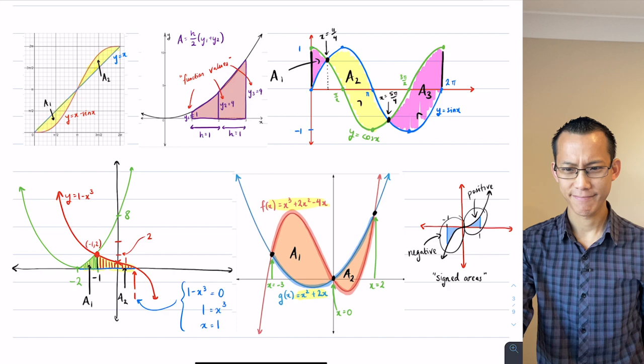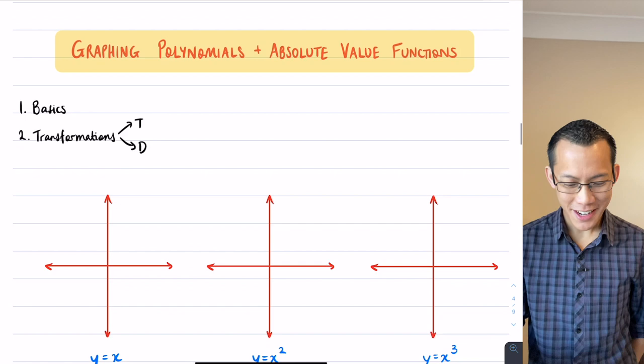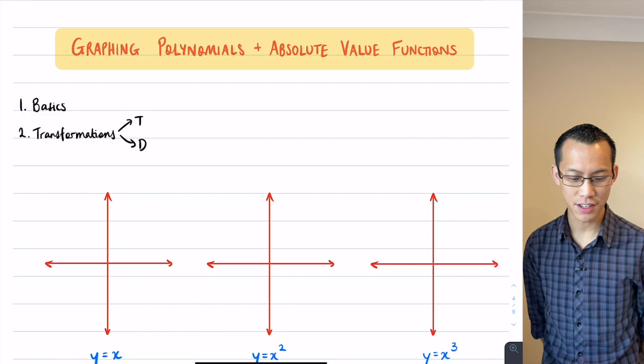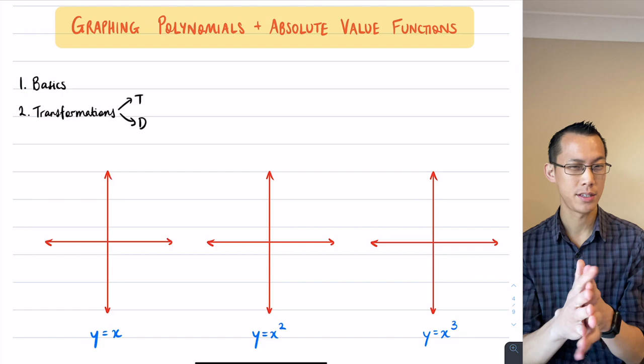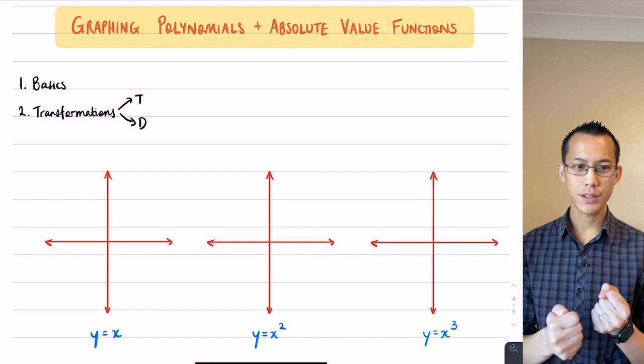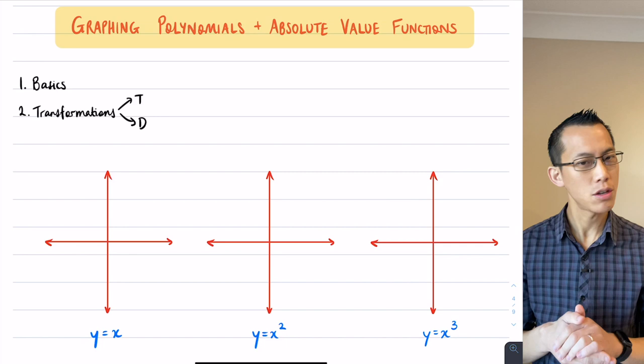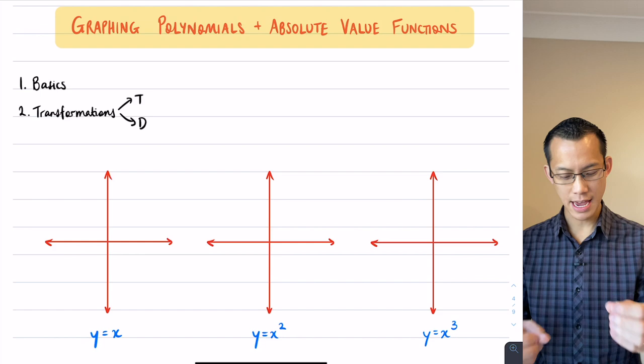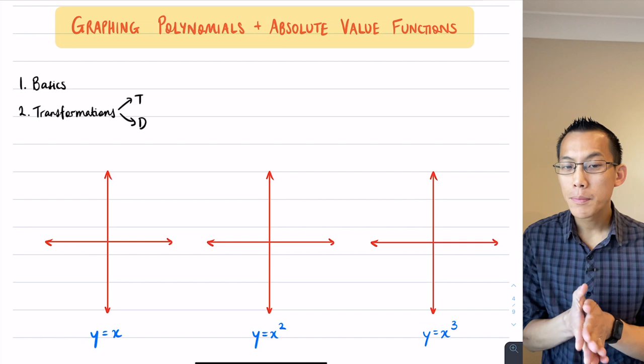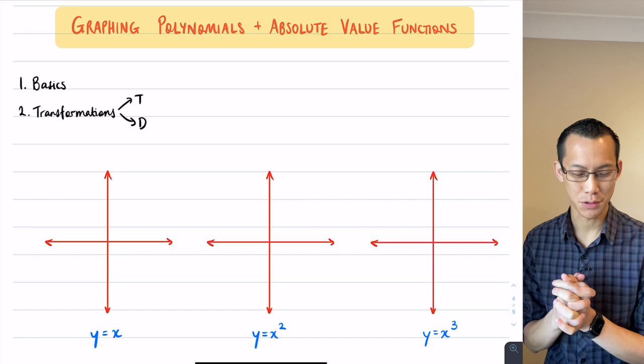This morning where we're going to begin is with that family of functions that is most familiar to you: the polynomials. We're also going to throw in absolute value functions just because we can. For each of these polynomials and absolute value, and then for the other families of functions in the coming days, we're just going to look at the basics first. Then what we're going to focus on is when you take those basic functions—you can see some of them here, we're about to draw them—what we want to focus on is two different ways to transform these graphs, to take the basic version and then modify it in this way or that way. There's two particular transformations we're going to look at: one starts with T and one starts with D.